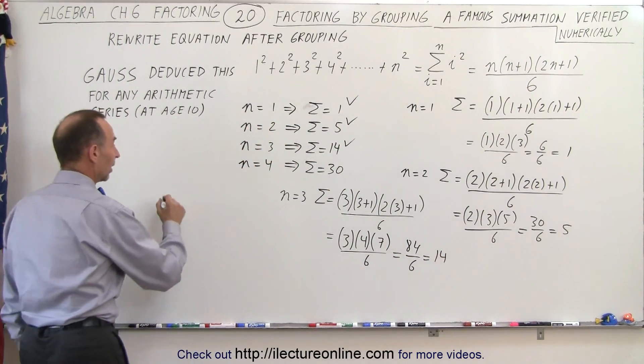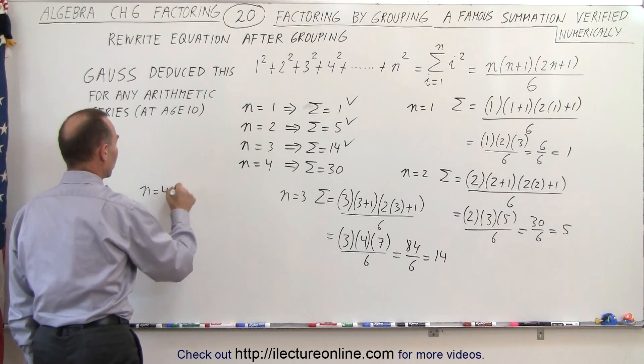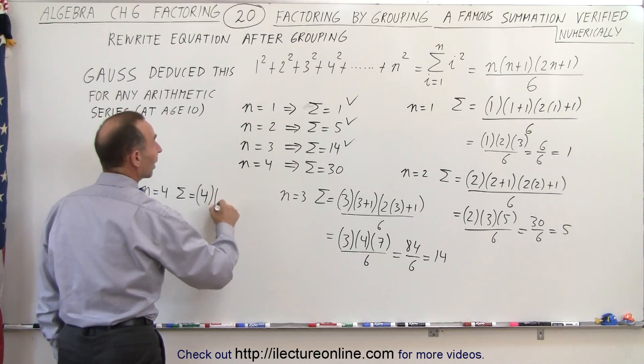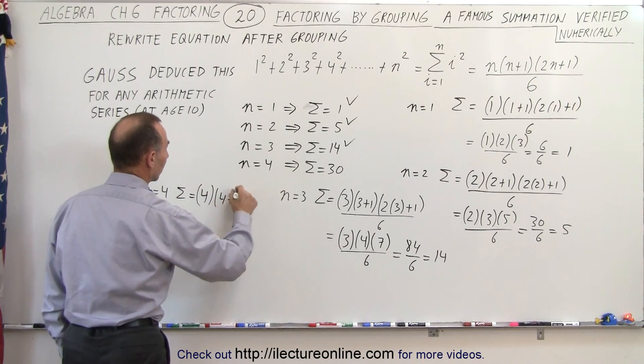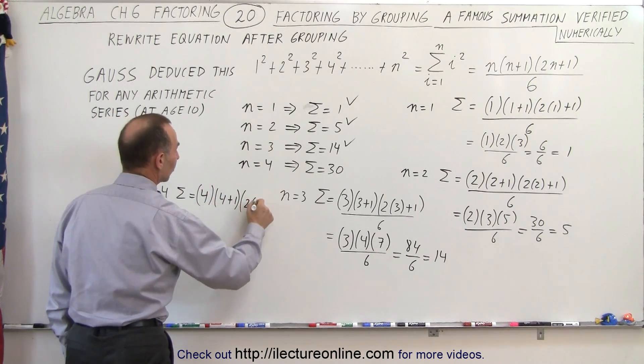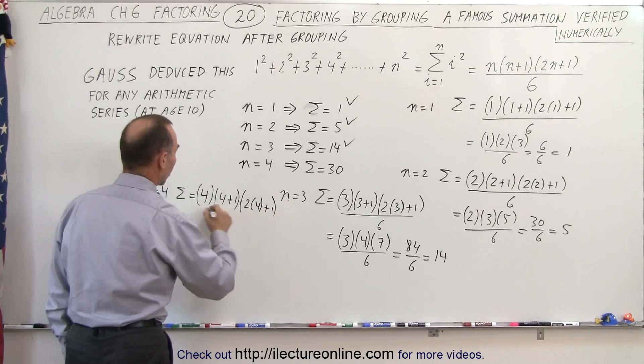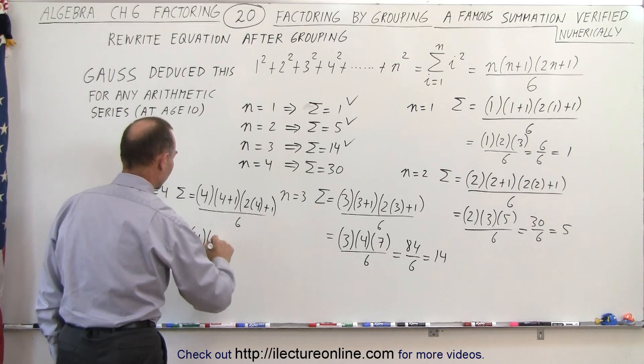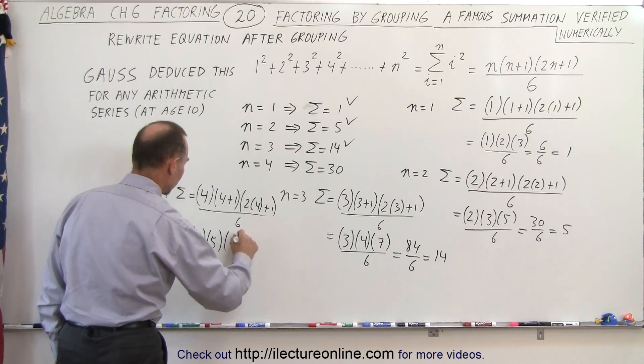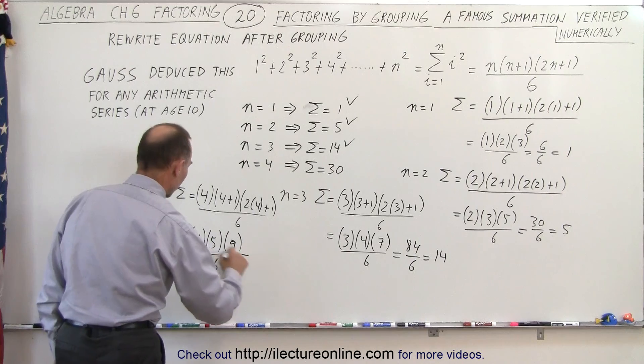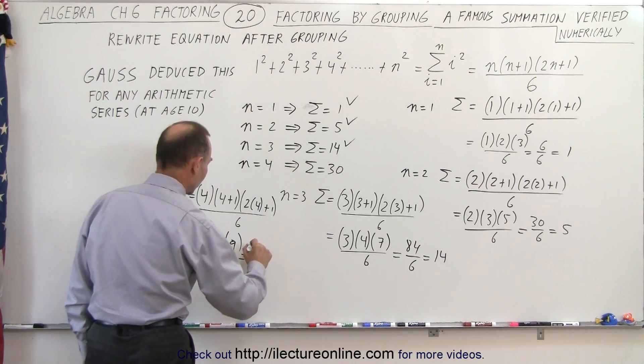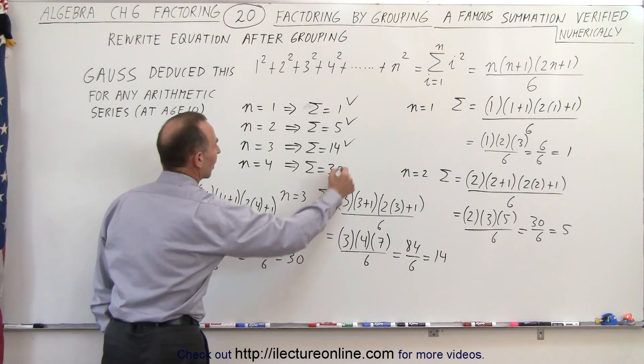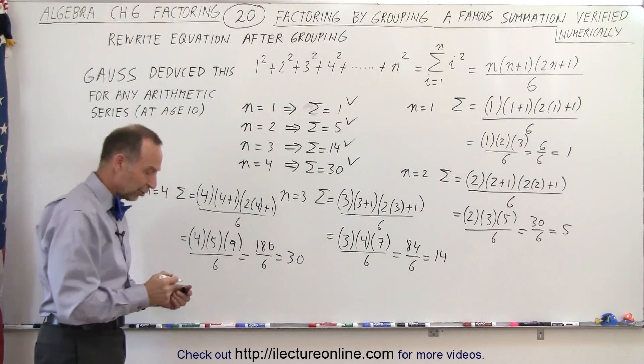And one more for n equals 4. The summation is going to equal 4 times (4+1) times (2×4+1) all divided by 6, which is 4 times 5 times 9 divided by 6, which is 20 times 9 which is 180 divided by 6, which is 30. And sure enough it seems to work just fine.